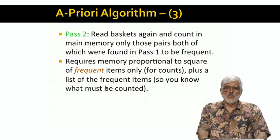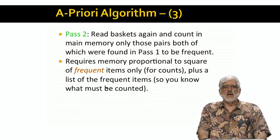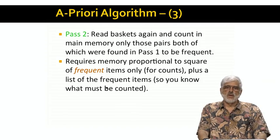The main memory we need depends on the square of the number of frequent items only, but there's a small amount of additional main memory we need for a table that lets us know which of the items are, in fact, frequent. As we read a basket from disk, we look at all its items and ignore any that are not in the table of frequent items. From what remains, we generate all pairs and increment each of their counts.